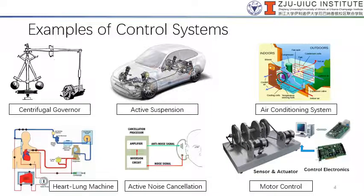Let's look at some examples of control systems. I'm sure some of these examples are already familiar to you, probably in your daily life — like the active suspension in your car, which you may have encountered in your dynamics class. Control systems don't just appear in mechanical systems; they can also be in other domains, like active noise cancellation.